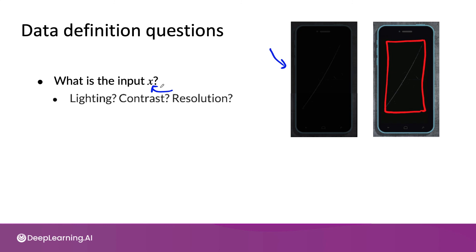For structured data problems, defining which features to include can have a huge impact on your learning algorithm's performance. For example, for user ID merge, if you have a way of getting the user's location — even a rough GPS location — and you have permission from the user to use it, that can be a very useful cue for deciding whether two user accounts belong to the same person. Please do this type of thing only if you have the user's permission to use their data this way.